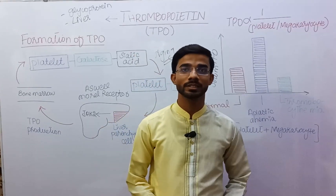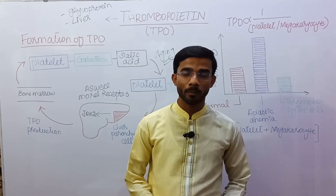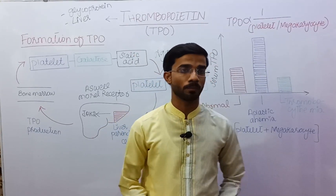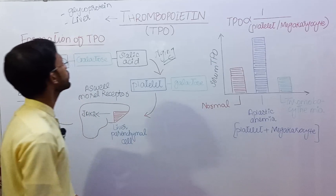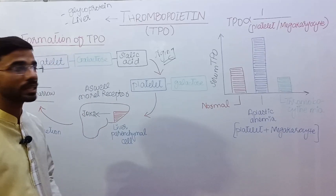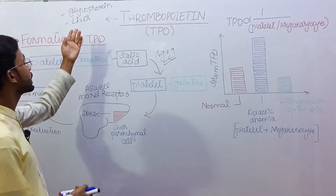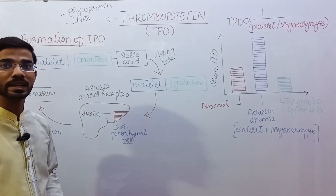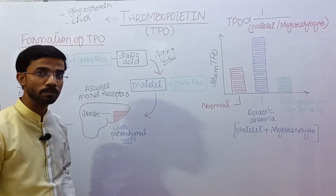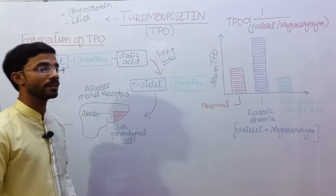Now I am going to discuss thrombopoietin, TPO. TPO is basically a glycoprotein which is mainly produced by the liver.